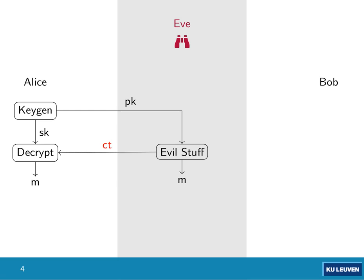Eve is in the middle and wants to learn the secret key of Alice. She has the public key and does some evil stuff to generate a ciphertext or something that looks like a ciphertext. She submits this ciphertext to Alice, who decrypts it using her secret key and ends up with a message. Based on this message or the reaction of Alice, Eve learns something about the secret key. These types of attacks are possible for many schemes and are described in literature.